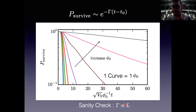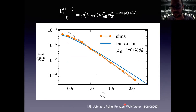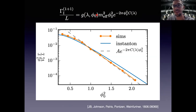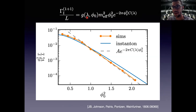By fitting we extract γ, and as a sanity check the decay rate scales correctly with the simulation side length. Now we compare γ as a function of φ₀ versus the instanton prediction. The only unknown is the order-one number g, yet we are exponentially sensitive to C on this plot. The orange line is the simulation result; the blue and gray dashed lines are instanton-formalism calculations with different assumptions about the fluctuation determinant. Given the exponential sensitivity, this is a remarkably good fit.